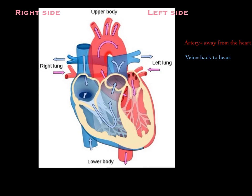The blood cells in your circulatory system, once out of oxygen, have to come back to the heart through these two vessels from the upper body and the lower body. Once it comes back, the heart is responsible for pumping that deoxygenated blood to the left lung and the right lung, where gas exchange occurs in the alveoli. After gas exchange occurs, the reoxygenated blood comes back to the heart, and the heart pumps that blood to the rest of the body.